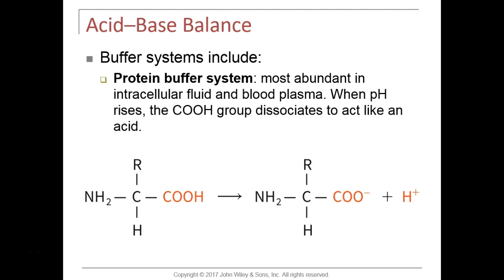On the other hand, if the blood pH falls too low and becomes acidic, a buffer can soak up or absorb hydrogen out of solution. The acid gets buffered onto or bound to the buffering molecule. Looking at a typical amino acid — all amino acids, which make up proteins, have an amino group, a central carbon with a hydrogen, and a carboxyl group in common.